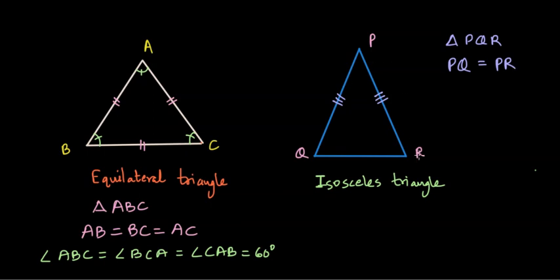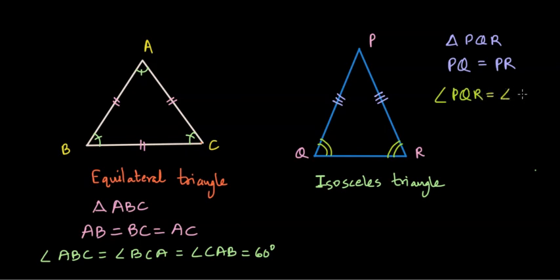Another interesting property of an isosceles triangle is that the angles opposite to the equal sides are also equal. Angle PRQ is opposite side PQ, and angle PQR is opposite to side PR, and therefore these are equal. So angle PQR is equal to angle PRQ.